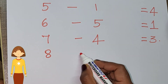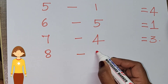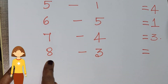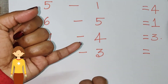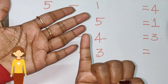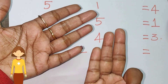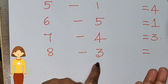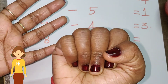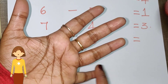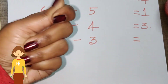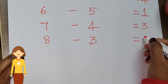Next: eight minus three is equal to dash. Eight in fingers — one, two, three, four, five, six, seven, eight. Close three fingers — one, two, three. Remaining open fingers: one, two, three, four, five. So the answer is five.